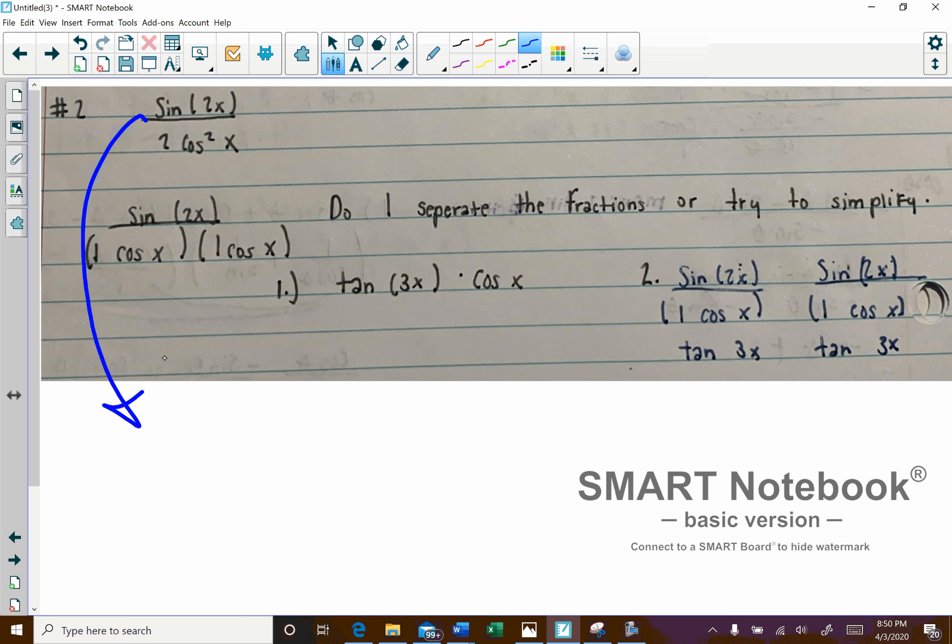So going down here, I'm going to turn this into 2 sine x times cosine x, or it doesn't really matter what order you put it in, all over 2 times cosine x squared. And then what we can do here is the 2s can cancel out. And then this cosine is going to cancel out with one of the cosines here.